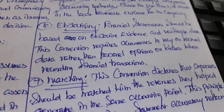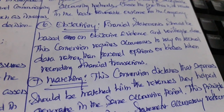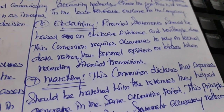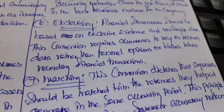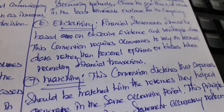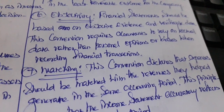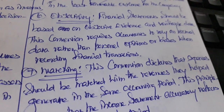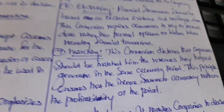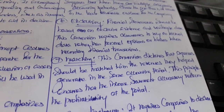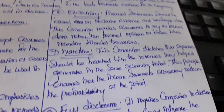An accountant never records transactions based on personal opinions or biases — proper evidence of the data is always required.